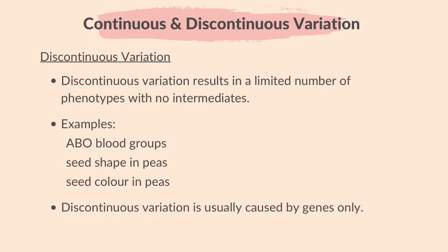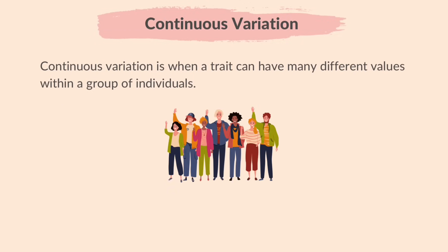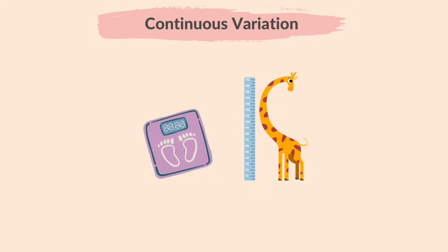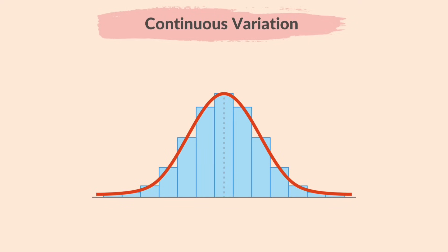Discontinuous variation is when a trait can have many different values within a group of individuals — it's like a smooth gradual change without clear categories. For example, when we talk about height, people can be short, tall or any height in between; it's a spectrum with no distinct groups, just a range of possibilities. These traits can usually be measured on a scale, for example mass, height, etc. When graphs of these data are plotted, continuous variation gives smooth bell curves.